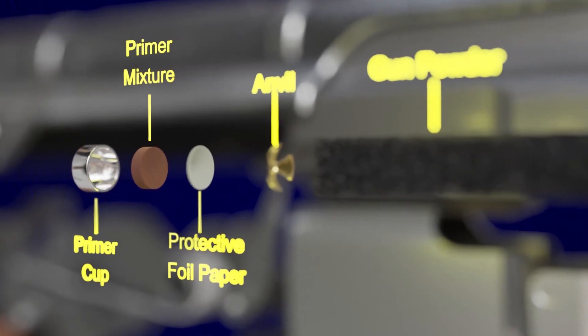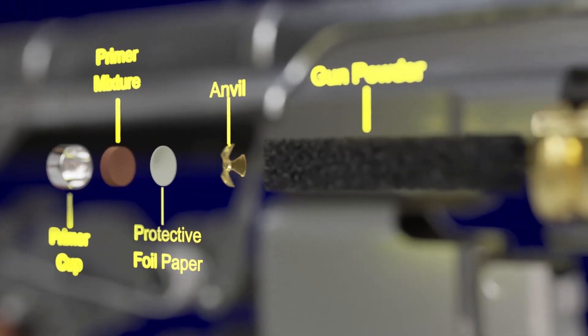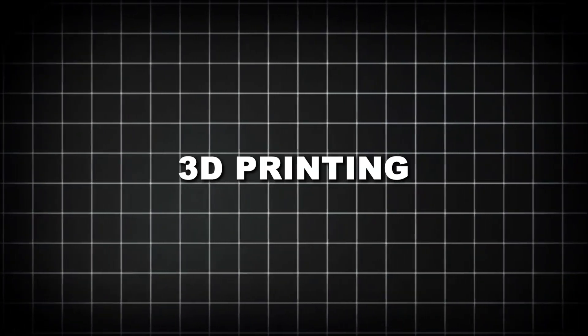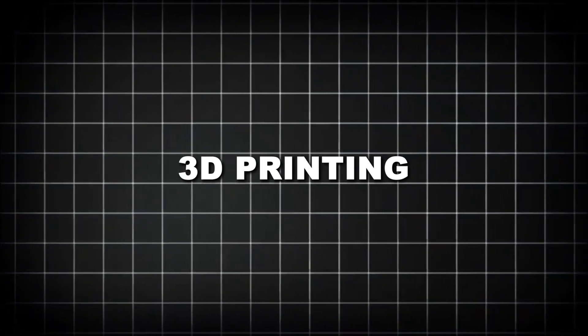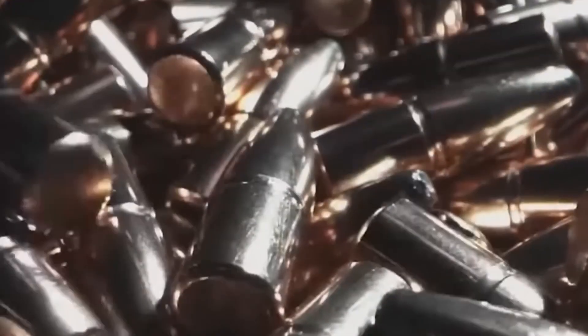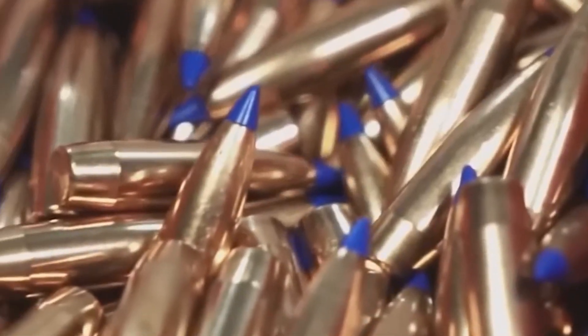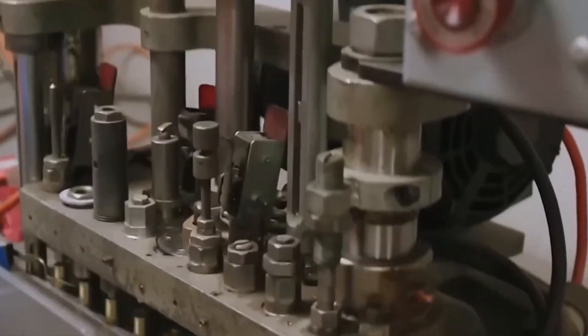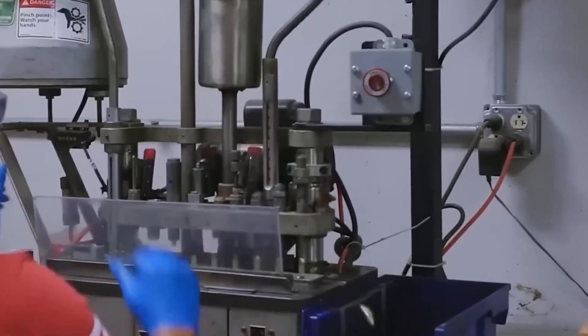Some manufacturers are exploring entirely new production methods, including metal injection molding for complex bullet shapes and additive manufacturing, 3D printing, for specialized components. While traditional processes will likely remain dominant for high-volume production, these new technologies offer exciting possibilities for specialized ammunition.